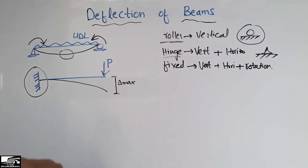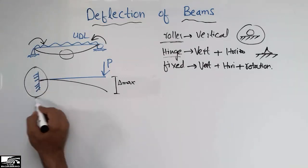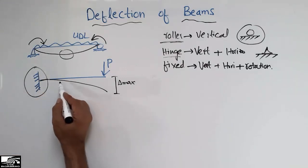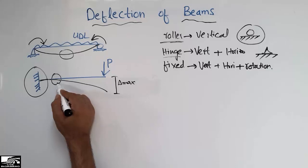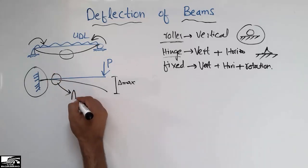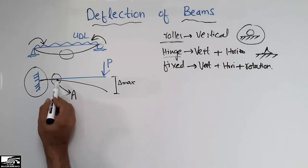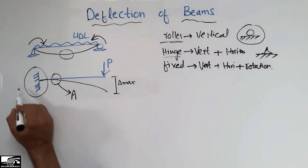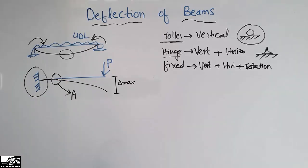The fixed support property means it can resist vertical, horizontal loads as well as rotation, so there will be no rotation at the fixed support. Rotation starts at some point along the beam. This is the deflected shape of this cantilever beam.